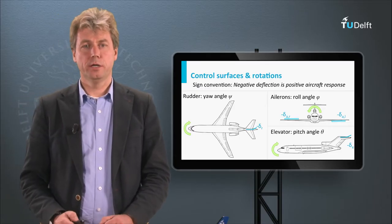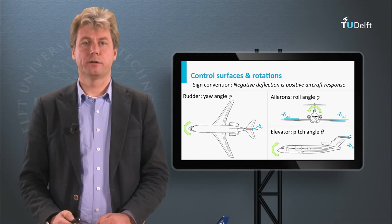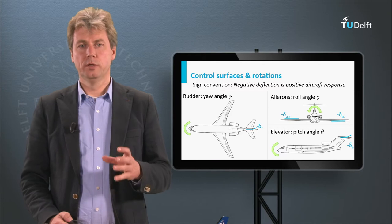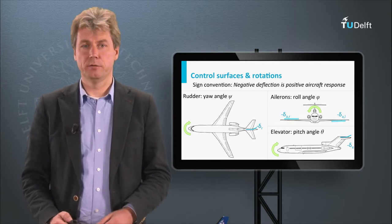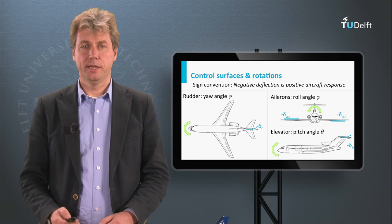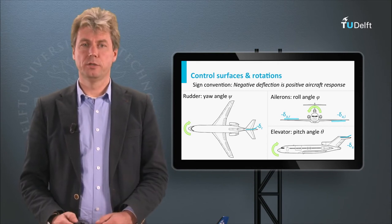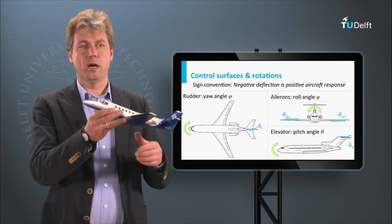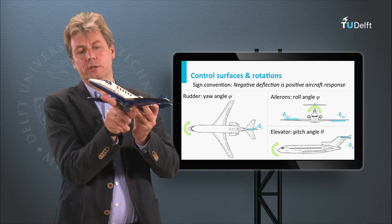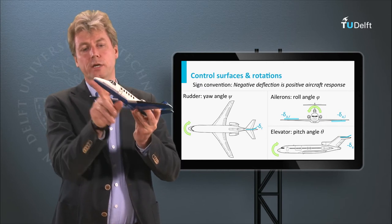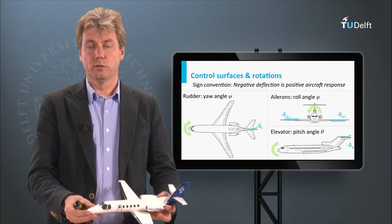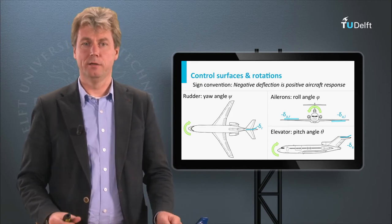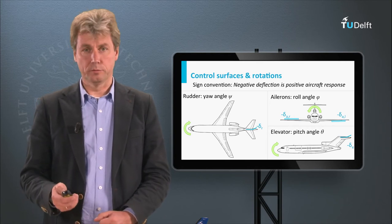So far I used the body axis, which is attached to the body of the aircraft. For stability we often want to look at an equilibrium situation as our starting point, and therefore the speed vector is often used as the x-axis. The aircraft is normally flying under an angle of attack, so the speed vector points in another direction than the body axis. This is more convenient for stability derivations, because that is our equilibrium, our neutral position.